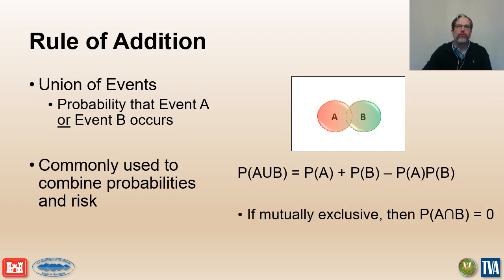The rule of addition is used in risk analysis to calculate the probability for the union of events. The total probability of failure and the total risk estimate are calculated by summing the probability of failure and the risk over all of the end branches of an event tree. When the events are not mutually exclusive, an adjustment must be made to account for the probability of the intersection event, shown in the Venn diagram as the overlapping area and in the equation as the probability of A times the probability of B.